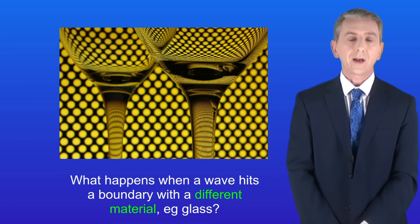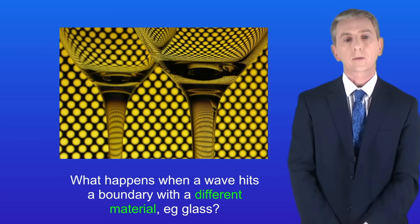So the question is what happens when a wave hits a boundary with a different material, for example glass. In this case three different things can happen.